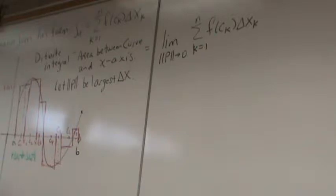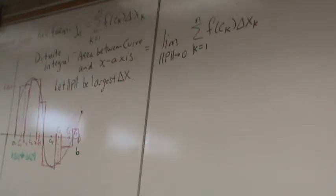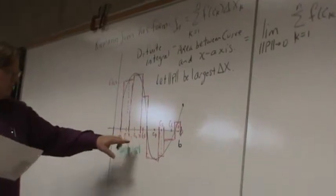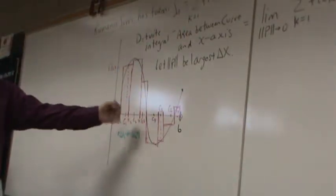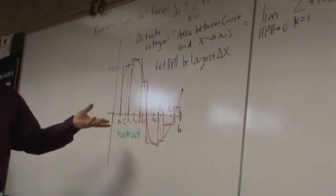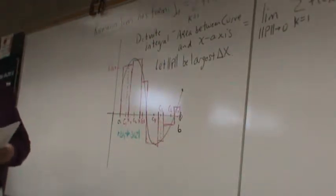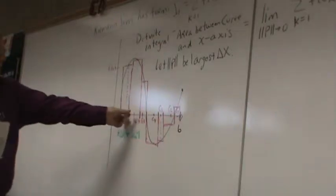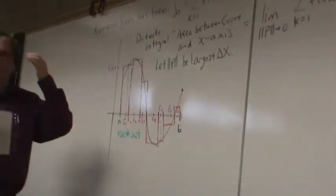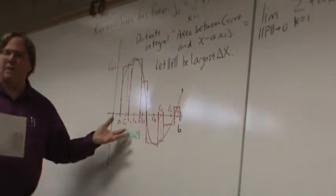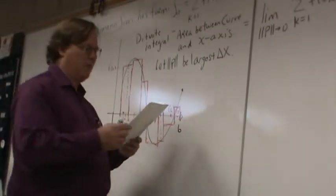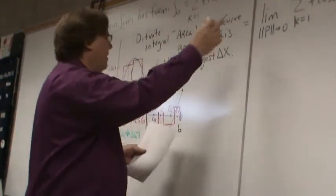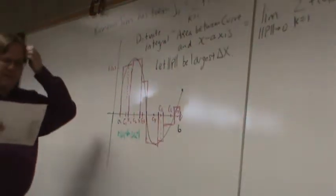If I'm going to let the largest partition go to 0, then necessarily the number of rectangles I'm going to use becomes infinite. I've got to use more and more — if I want my largest partition to be really tiny, I'm going to need lots and lots of partitions. This is just a way of saying I want an infinite number of rectangles. This is the definite integral from A to B.